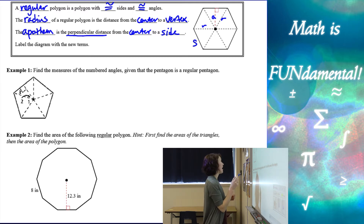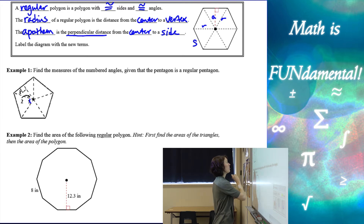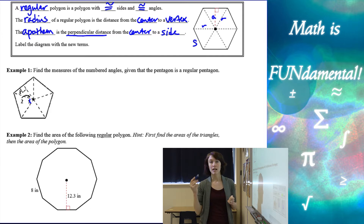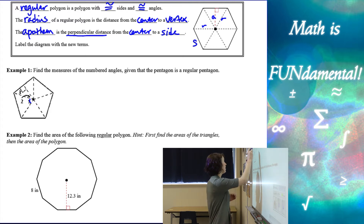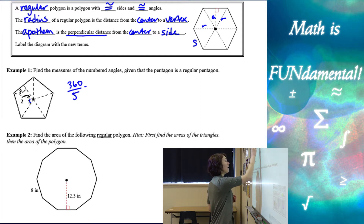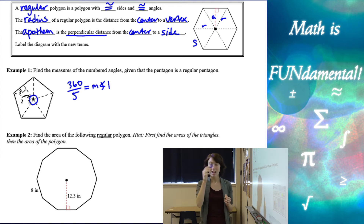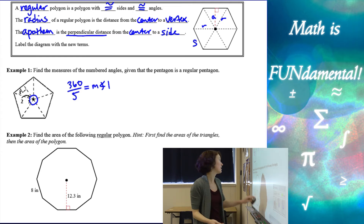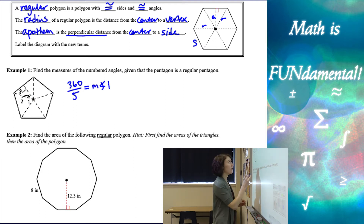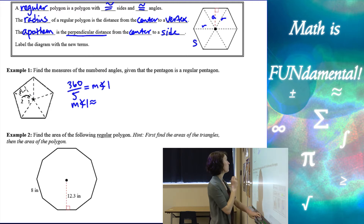Let's look first at angle one. We've broken this pentagon into five equal triangles, and angle one is what we call a central angle of this pentagon. We're going to take 360 and divide it by five to get the measure of angle one. Each instance of angle one all the way around makes a circle, and we have 360 degrees in a circle. So angle one is going to be absolutely 72 degrees.